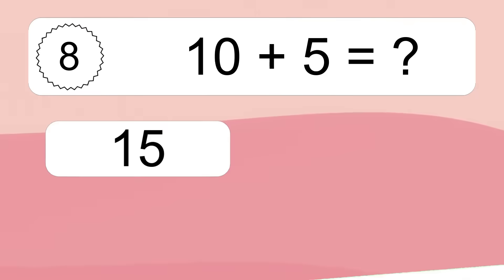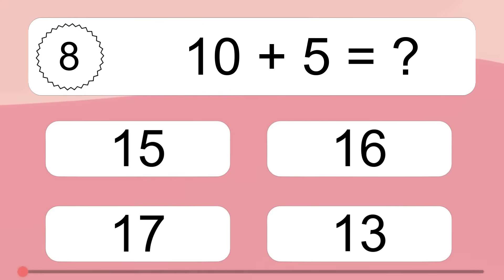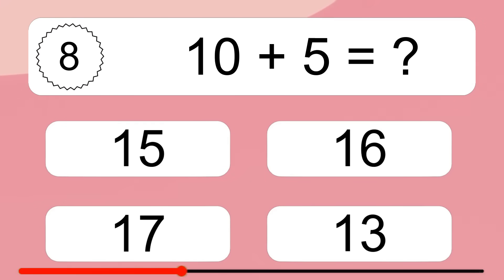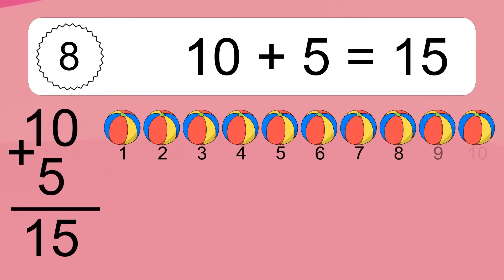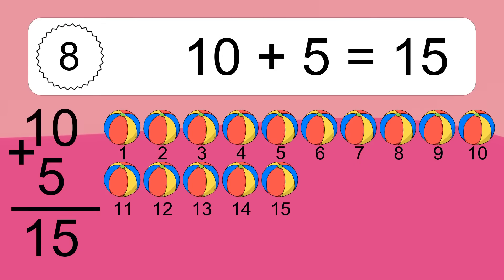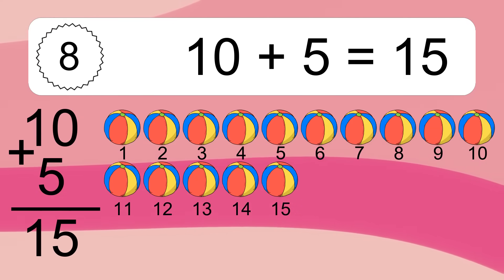10 plus 5 equals what? 10 plus 5 equals 15. Let's count it: 1, 2, 3, 4, 5, 6, 7, 8, 9, 10, 11, 12, 13, 14, 15.